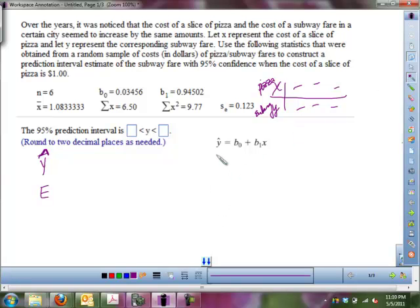So we have Y hat is B sub 0, that's 0.03456, plus B sub 1, 0.94502, times X. The X in this case that they're referring to is the point that we want to use to make our estimate. And that would be $1.